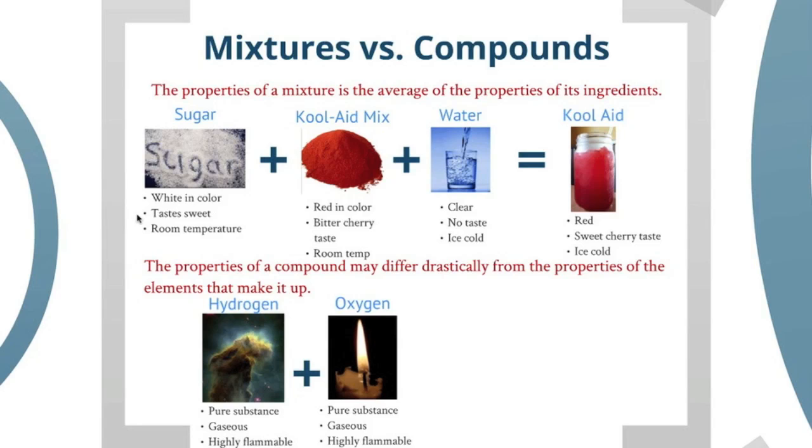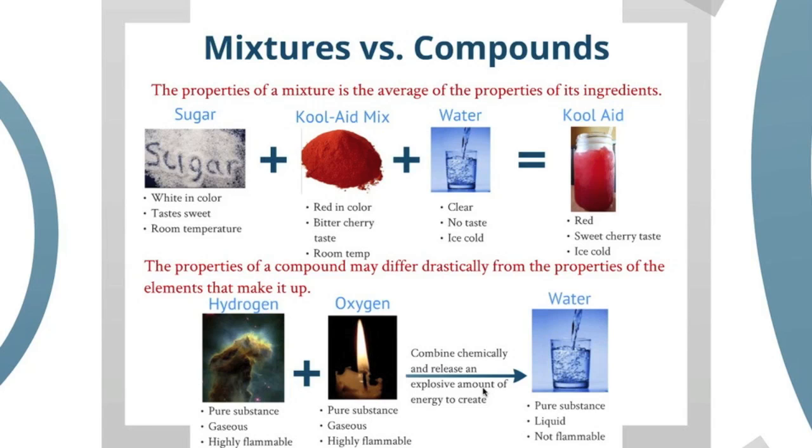Now, let's look at oxygen. Oxygen is a pure substance, it's an element. Oxygen is also gaseous, and oxygen is highly flammable. This candle would not be able to burn if it were not for the oxygen gas in the air. So what would happen if I took two flammable, gaseous substances and chemically combined them? If they underwent a chemical reaction and combined chemically, they're going to release an explosive amount of energy. Now, you don't get that when you mix these together, they just mix together and nothing really happens. But when these two react, because reacting is different from mixing, it's going to release an explosive amount of energy, and what you get is water.